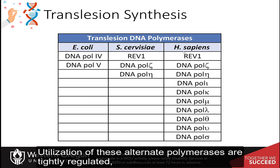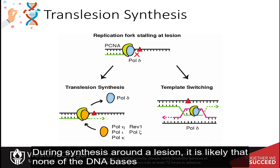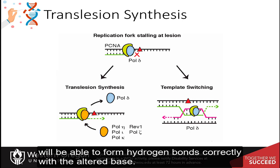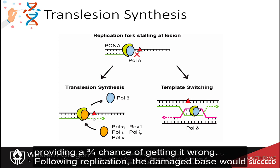Utilization of these alternate polymerases are tightly regulated so as not to introduce incorrect bases in other locations of the DNA. During synthesis around a lesion, it is likely that none of the DNA bases will be able to form hydrogen bonds correctly with the altered base. Typically, the least bulky residue will be inserted, providing a three-quarter chance of getting it wrong.